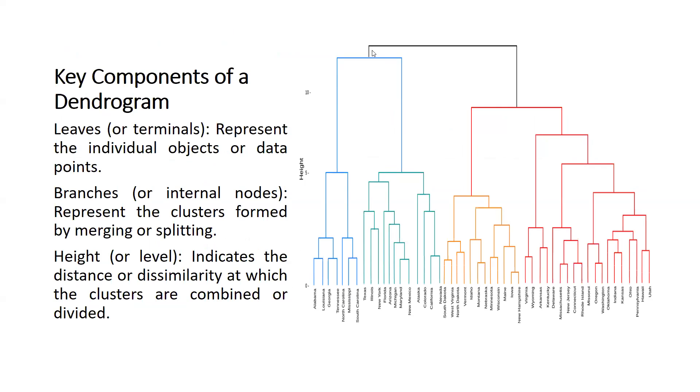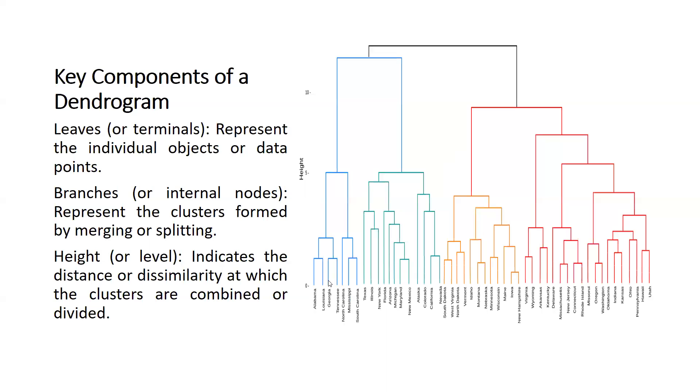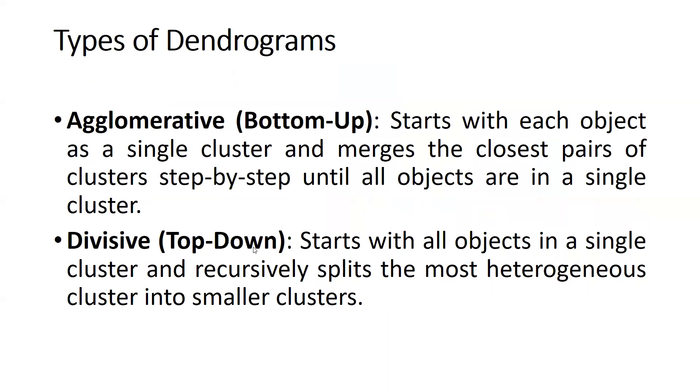This is the dendrogram and this is agglomerative when it started from bottom to up. Each object - these are single objects - and these are clubbed at this stage, these are also clubbed at this state, and further these are clubbed with the help of this cluster. After that, until one cluster is created, the black line reflects all clusters in one single group.